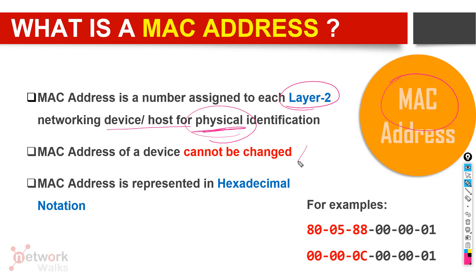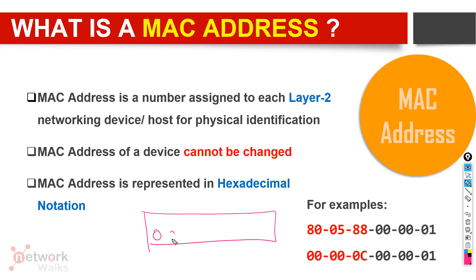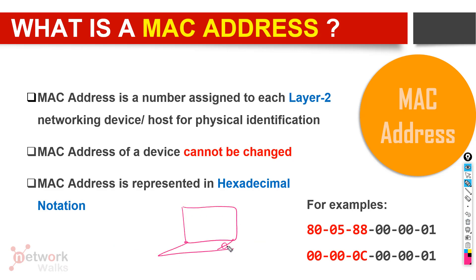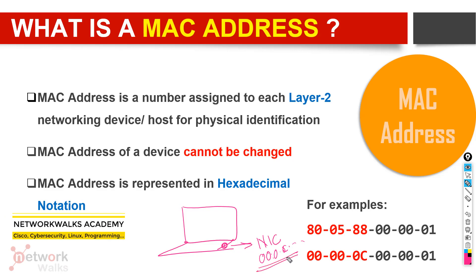The MAC address of a device can never be changed. For example, a Cisco switch has ports built with a specific MAC address, and a laptop with a network interface card will have a MAC address in hexadecimal — let's say 00-00-0C something. This MAC address is burnt in, hard-coded at the time of manufacturing, and for the whole life of the laptop this address is going to stay with it.